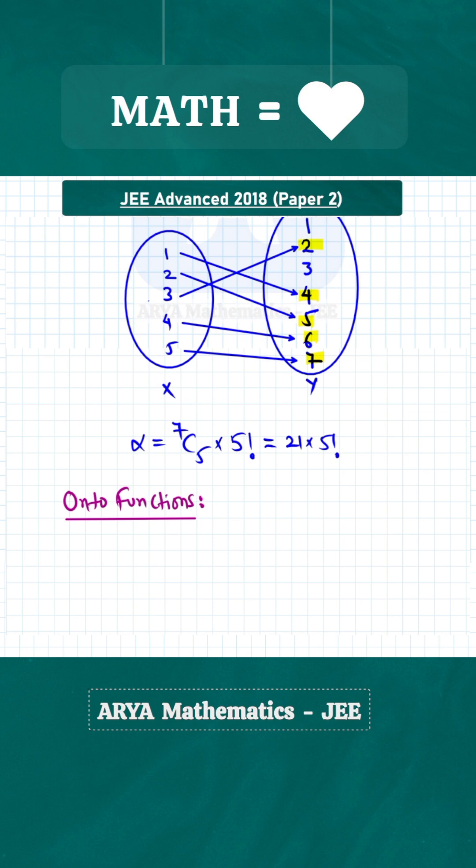This is a problem of division and distribution of distinct objects. First we divide 7 elements of set Y into 5 groups such that each group has at least 1 element. This can be done in 2 different ways. One possibility is 1, 1, 1, 1, 3, and another possibility is 1, 1, 1, 2, 2.